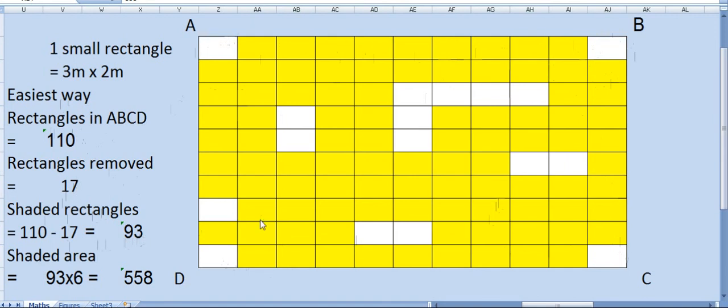Now we know these yellow rectangles are 93. What is the area of one rectangle? 6. So shaded area equals to 93 multiplied by 6. That is 558.